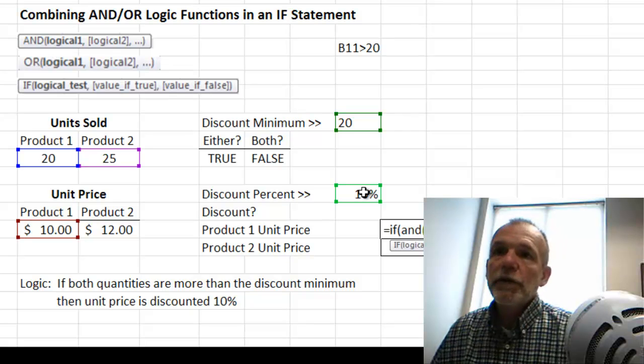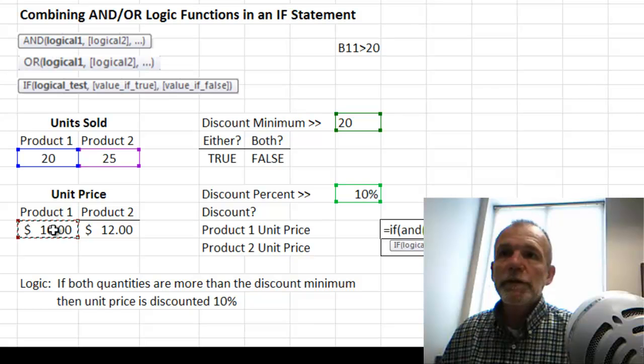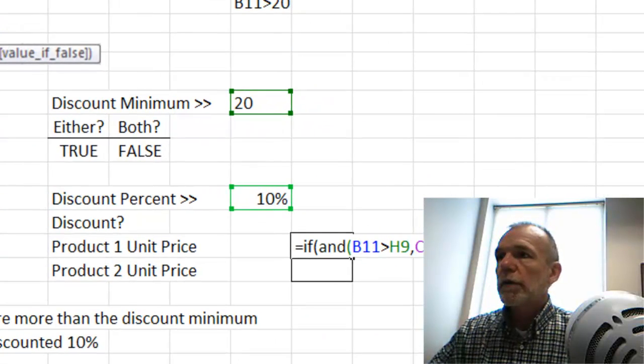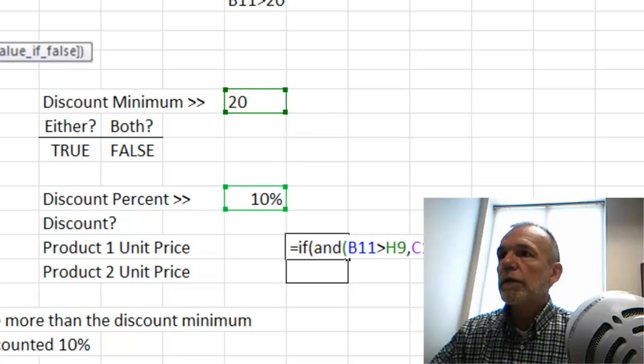If it doesn't evaluate as true, then the unit price is just going to be what's listed here, the $10, and so put a right parenthesis there.